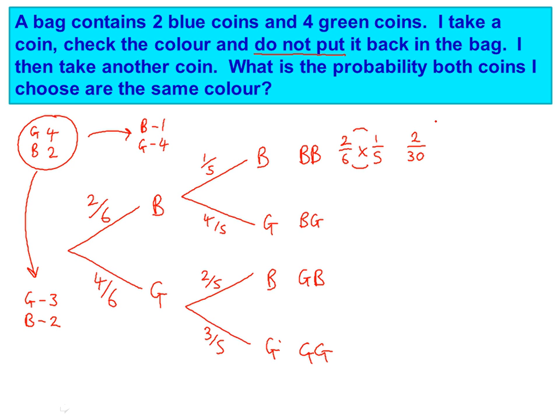Now we'll do blue, green. So we're going up to blue, which is two out of six, times down to green, which this time is four out of five. So times the tops together, times the bottoms together. And you will get eight on the top, 30 on the bottom.